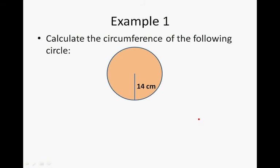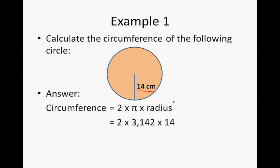Calculate the circumference of the following circle. The circle has a radius of 14 centimeters. This is the radius. So it will be 2 times the Pi times the radius, or Pi times radius times 2. So it's 2 times 3.142 times 14.